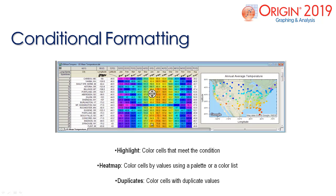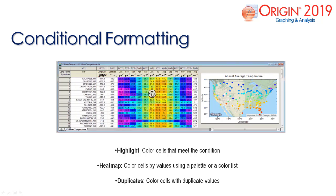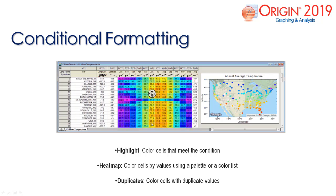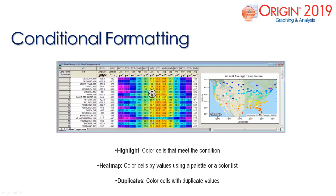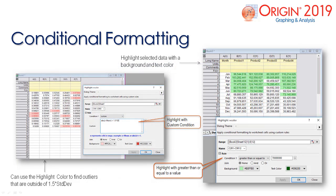Conditional formatting is new to Origin 2019. This feature highlights data in a worksheet according to conditions applied, by data values, or by finding duplicates. For example, you can highlight data with a custom formula or any values that are greater than or equal to a specific value.